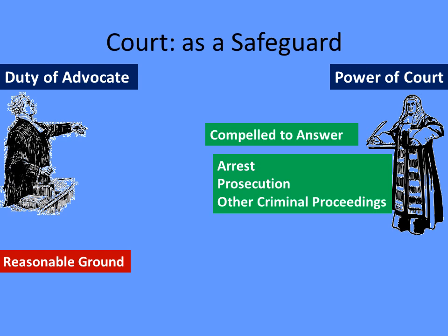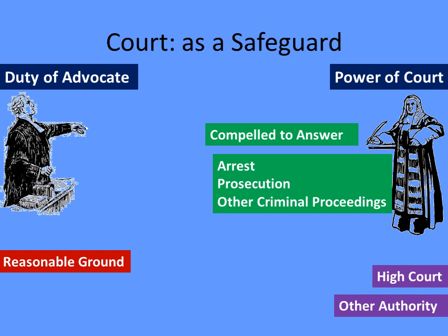The court compels the witness to answer those questions but also ensures that no arrest, no prosecution, and no criminal proceedings can be initiated against the witness, because the purpose of the witness's presence is to assist in delivering justice. If the advocate goes on asking unreasonable questions without reasonable grounds, the court can report it to the High Court for suitable action, or — more preferably — report it to the authority governing the advocacy profession, such as the State Bar Council or the Bar Council of India, who can take action against erring advocates.